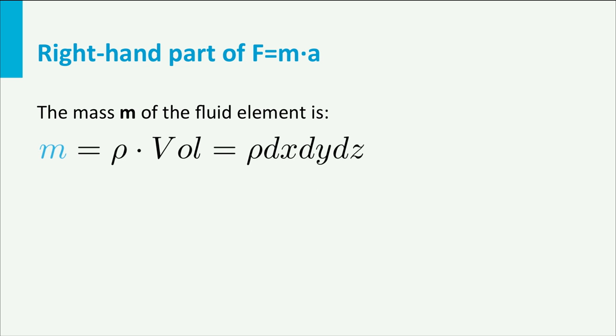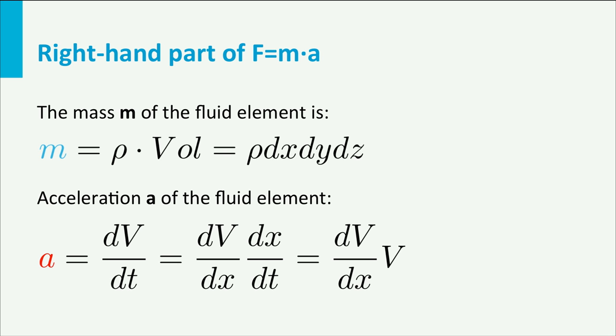Now the mass times acceleration part on the right hand side of Newton's law. The mass m of the fluid element is rho times the volume, so rho times dx dy dz. The acceleration is dv over dt. This can also be written as dv over dx times dx over dt. This last part is the velocity v, so for the acceleration we find a equals dv over dx times v.